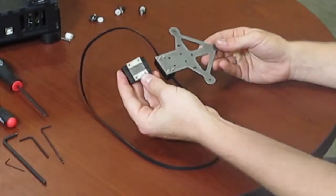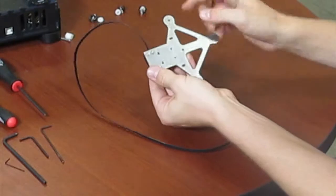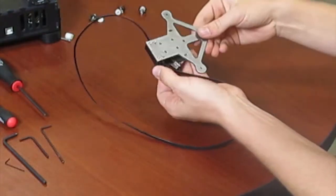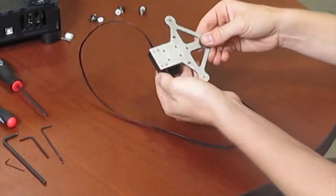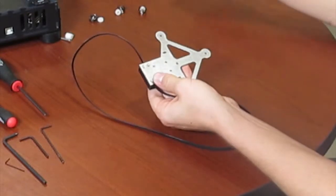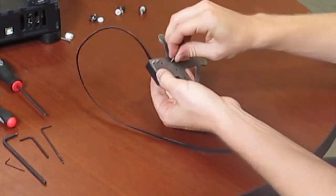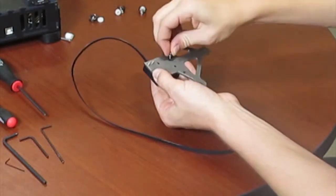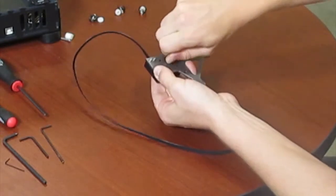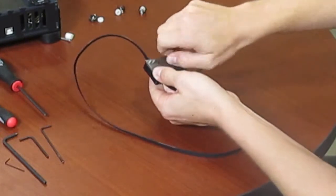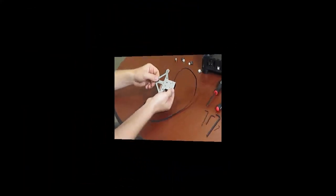Next is the carriage for the linear rail. This will attach to these four holes right next to the holes from the belt. Attach this using four M3 by 8 screws with lock washers, just one in each corner. I'm going to tighten those.